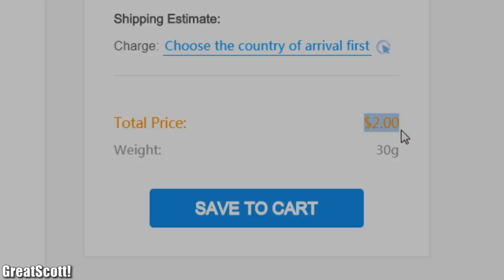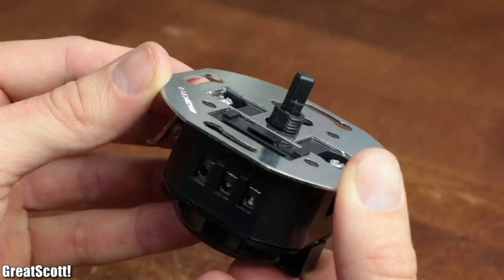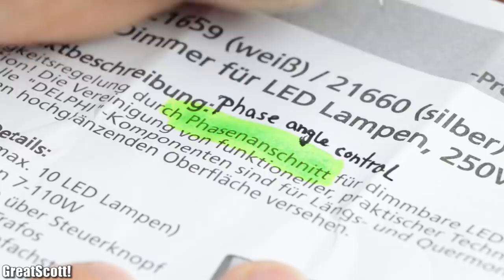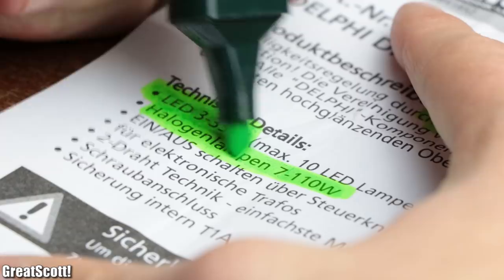The AC dimmer I got online was a pretty generic one that uses phase angle control to dim 3 to 35 watt LEDs and 7 to 110 watt halogen lamps.